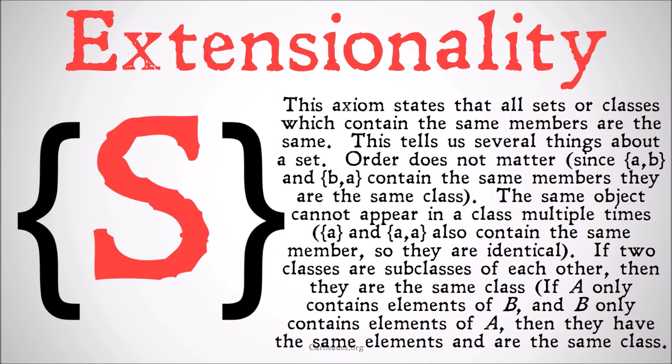We get several conclusions from this axiom. First off, order doesn't matter in a set. The set of AB is the same as the set BA because they contain all the same members, so they're the same set. The same object cannot appear in a class multiple times and count as different sets. So the set of A, the set of AA, or the set of AAAA — they're all the same set, because they contain all the same members. The number of times a member appears does not matter, so listing it more than once is just redundant.